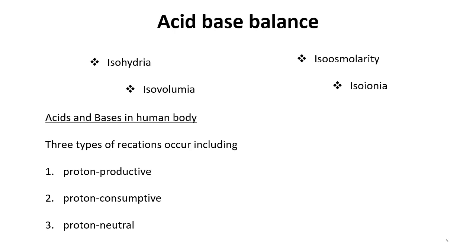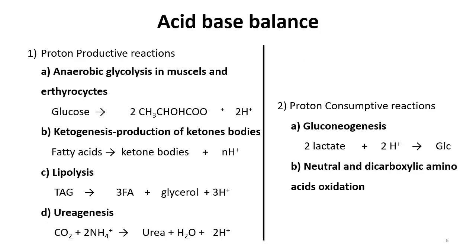There are three types of reactions in the human body regarding protons: proton productive, proton consumptive, and proton neutral reactions. Proton productive reactions generate protons, proton consumptive reactions consume protons, and proton neutral reactions do not affect the overall proton balance — though protons may be involved, the net balance is zero.